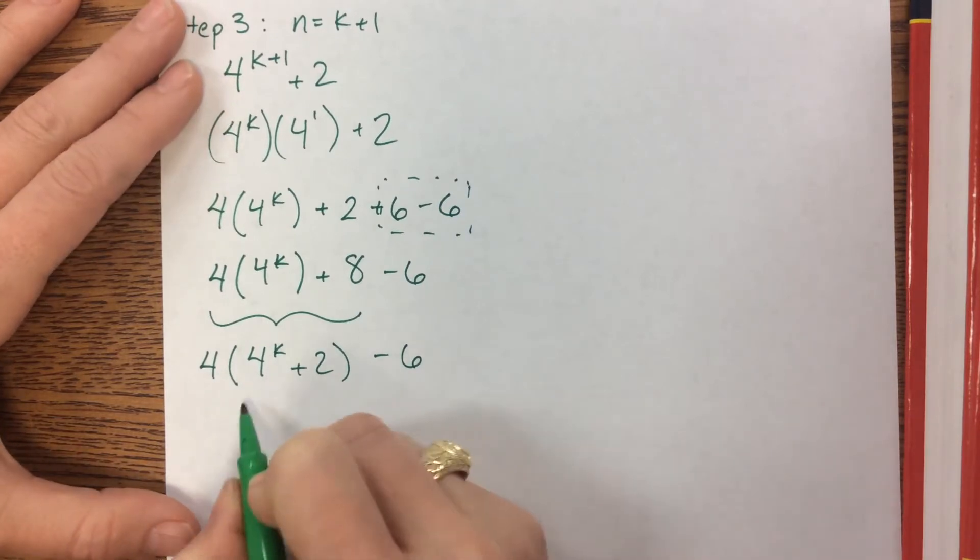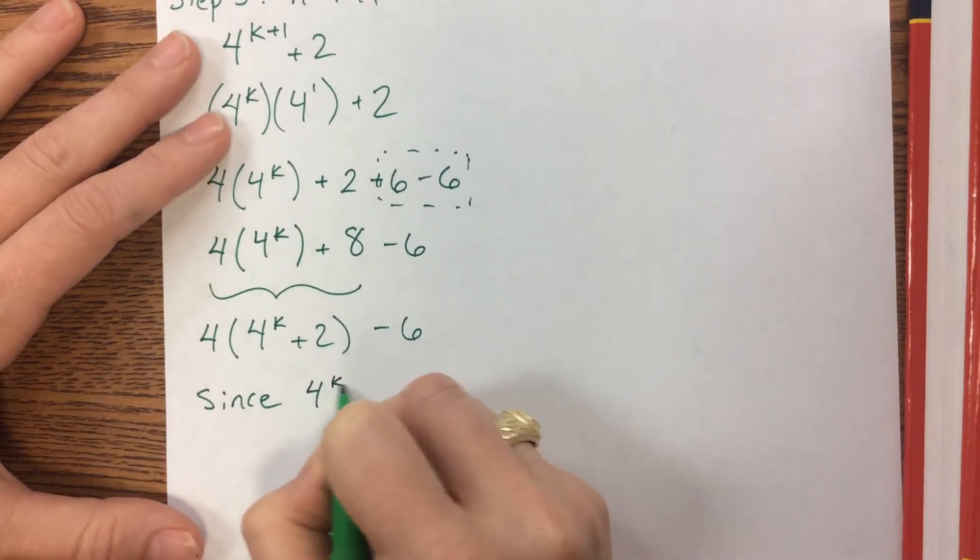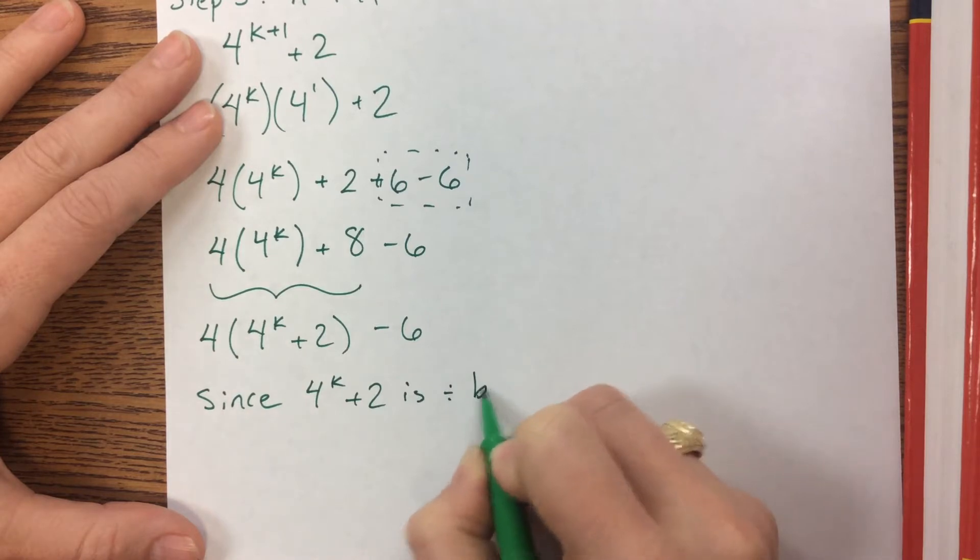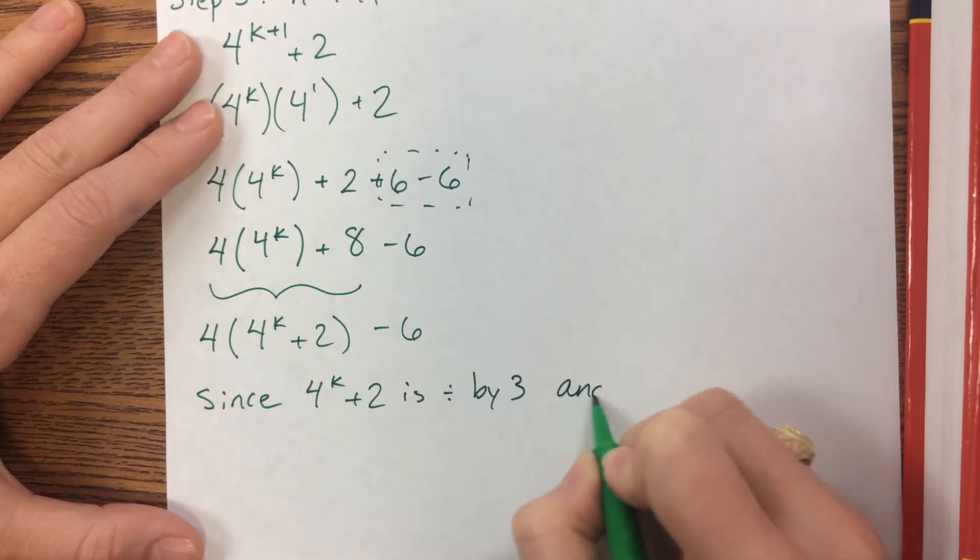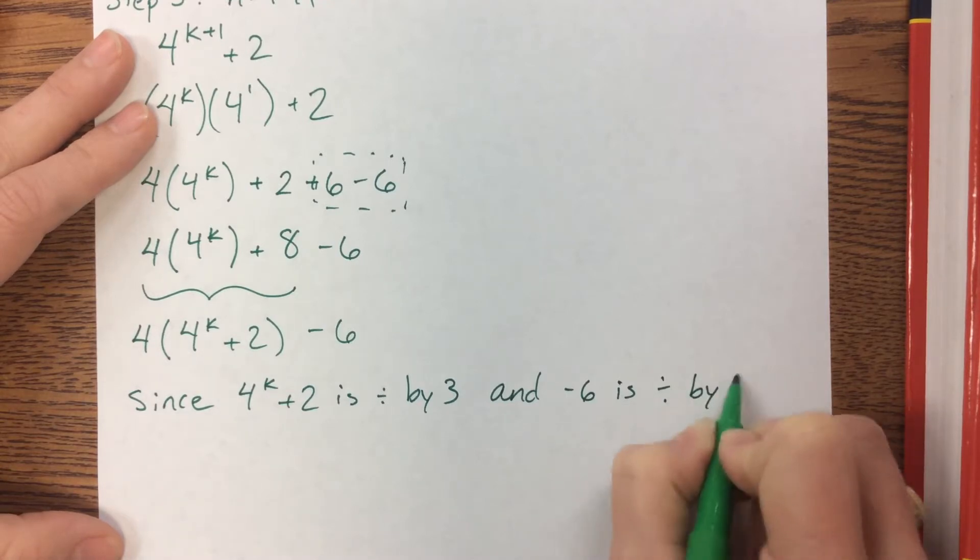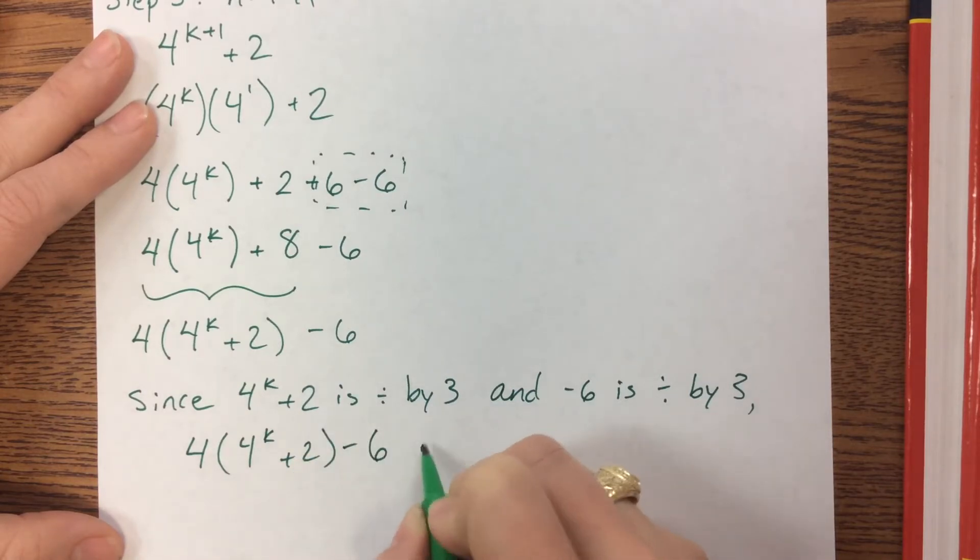And therefore, here is where I tend to just write a sentence: Since 4 to the k plus 2 is divisible by 3 and negative 6 is divisible by 3, 4 times 4 to the k plus 2 minus 6 is divisible by 3.